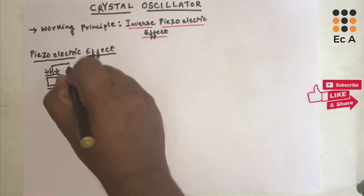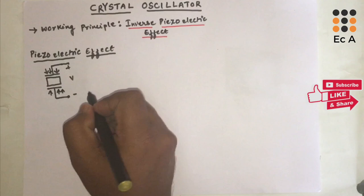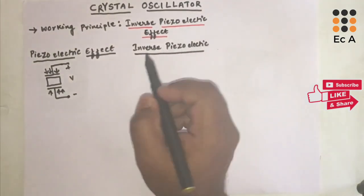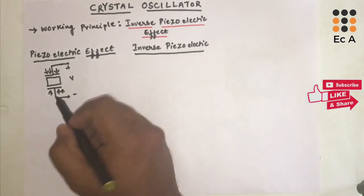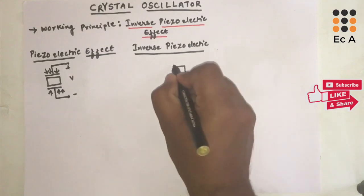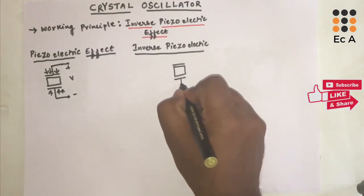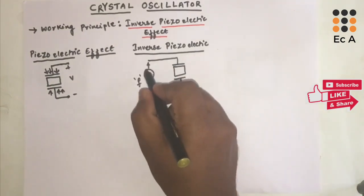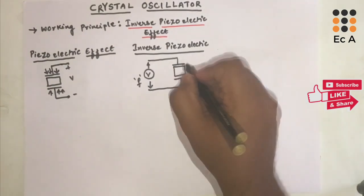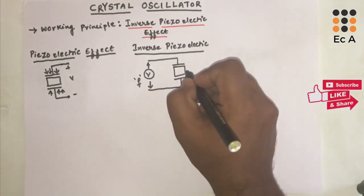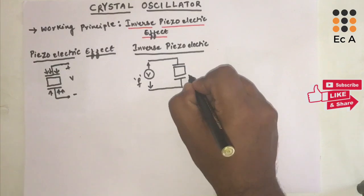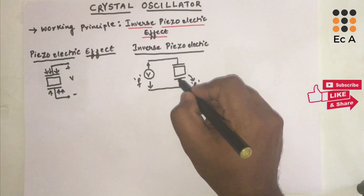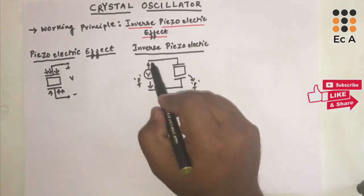This effect is known as piezoelectric effect. Now we will see what is inverse piezoelectric effect — it is the reverse operation of piezoelectric effect. If certain amount of voltage is applied to the terminals of the piezoelectric material with frequency f, the piezoelectric material will also vibrate with the same frequency.